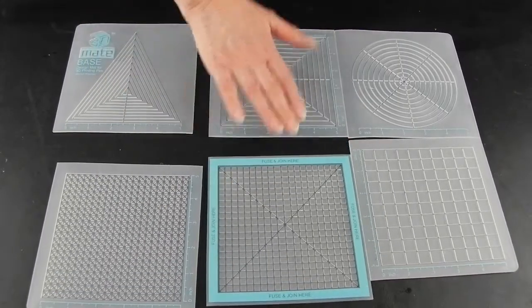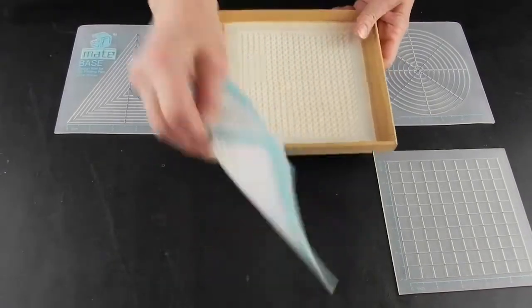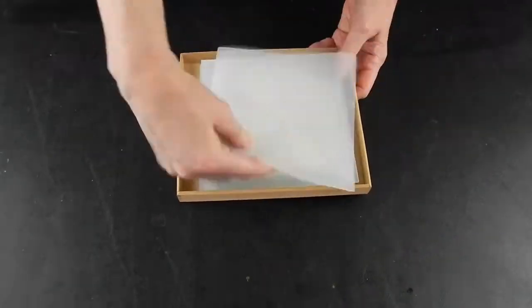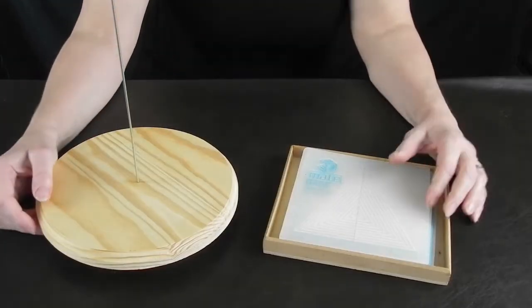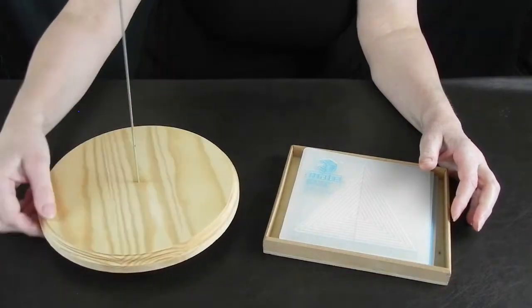Besides your pen and filament, you will need a 3D-made mat template, which I separated into segments so I can use them on my small turntable. And a turntable is something you can easily make yourself. The link to that video is above and in the description.